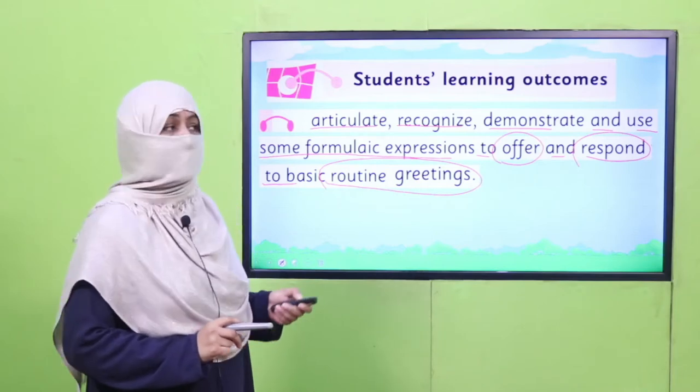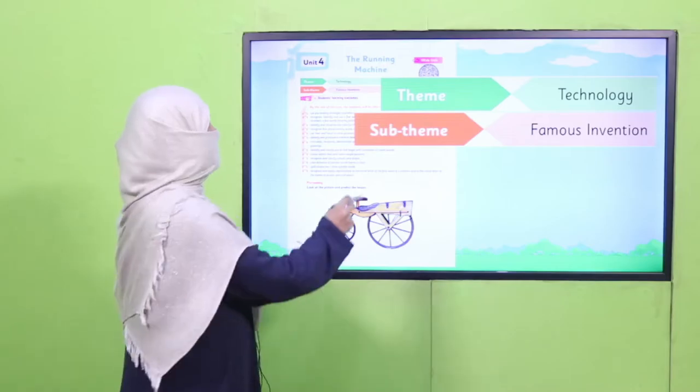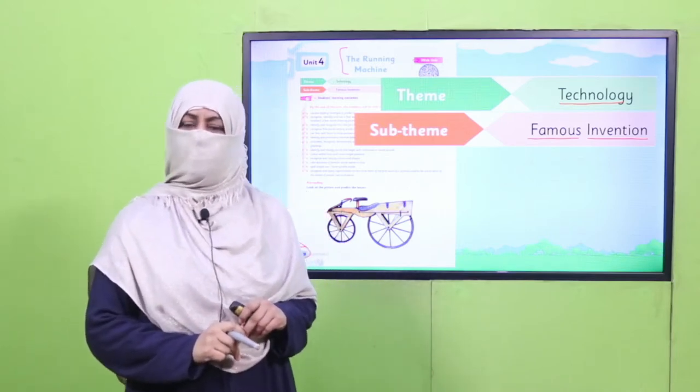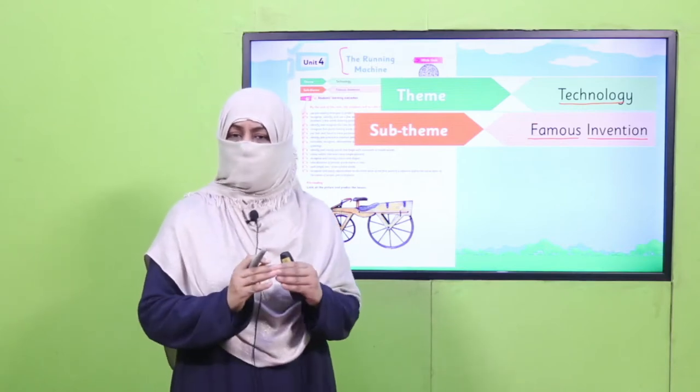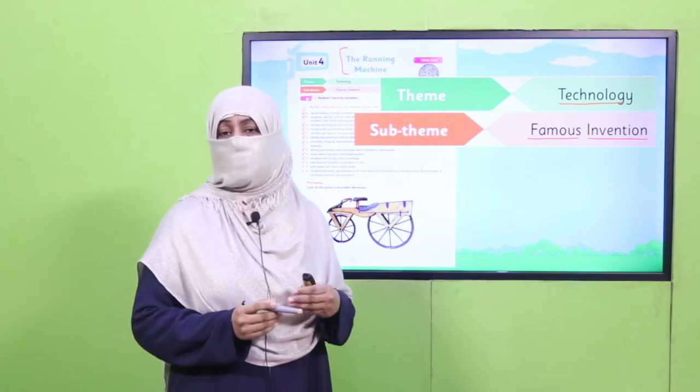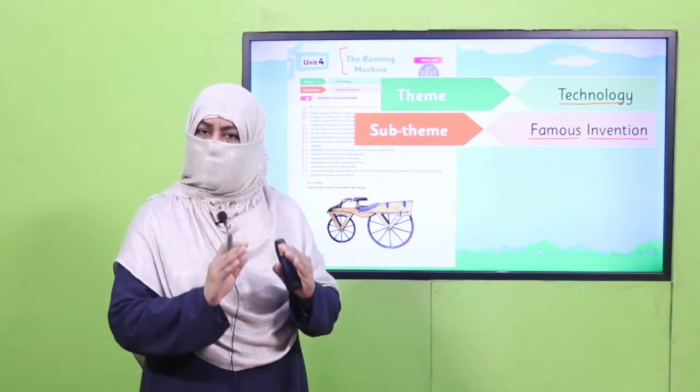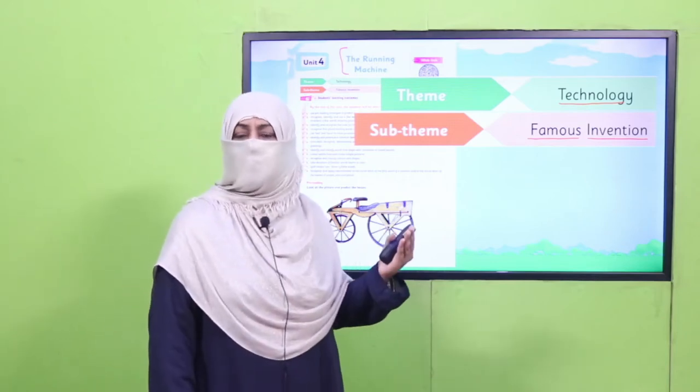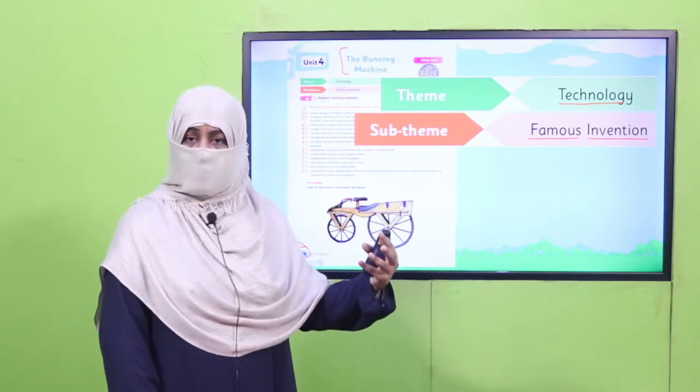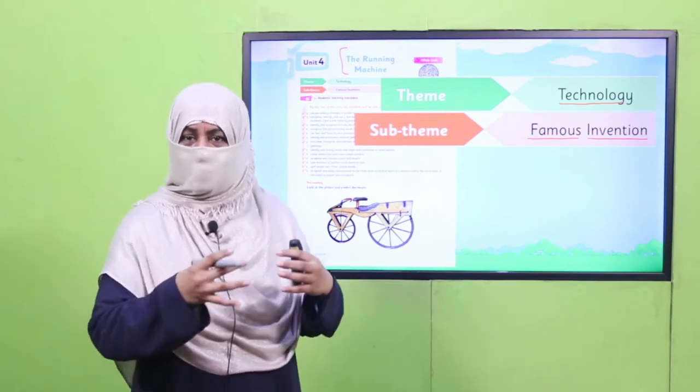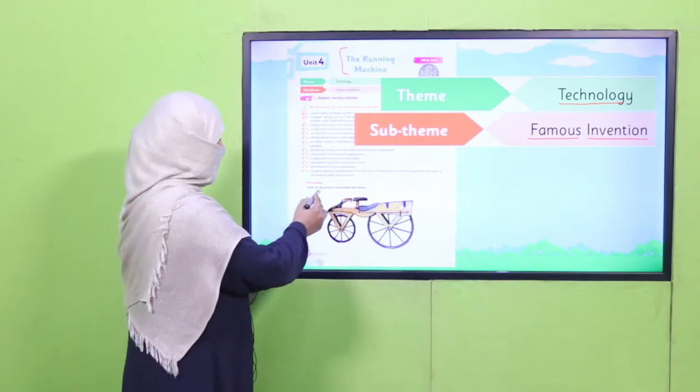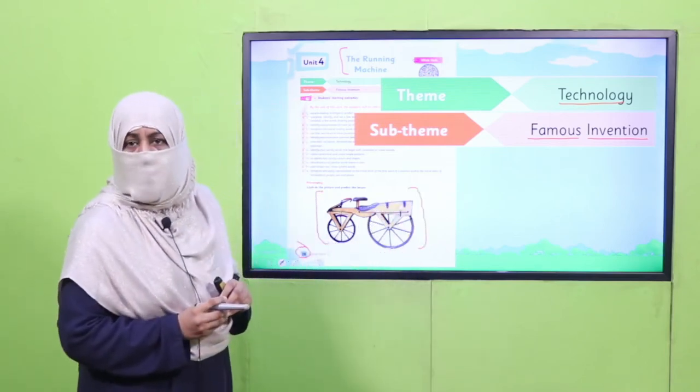Now it's time to understand what this lesson is about. On page 28, the title of this lesson is the running machine and its theme is technology. The sub-theme is famous inventions. Yes, my dear children, actually inventions - the actual inventor is Allah subhanahu wa ta'ala who created everything from nothing. And Allah ta'ala made every creation, but we people take things that already exist and combine them to make something new. This is called invention. For example, this lesson is about an invention that did not exist before, and that is bicycle.